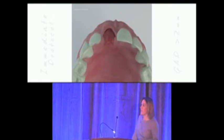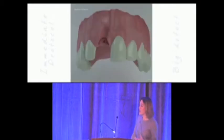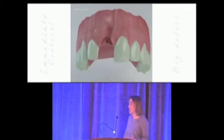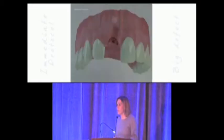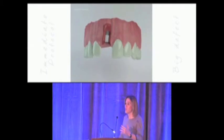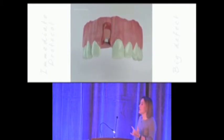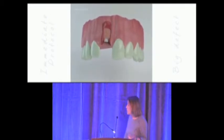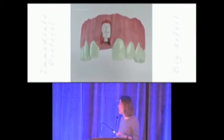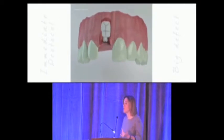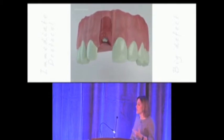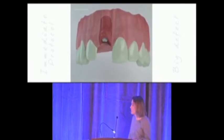But if the defect is even bigger — yet we can still place the implant — and it is a self-contained defect, we fill that gap with bone, place a membrane, and after removing the membrane we place a connective tissue graft on top.